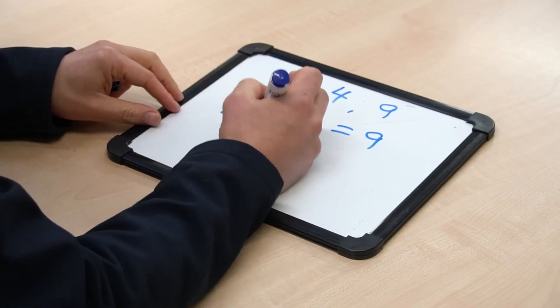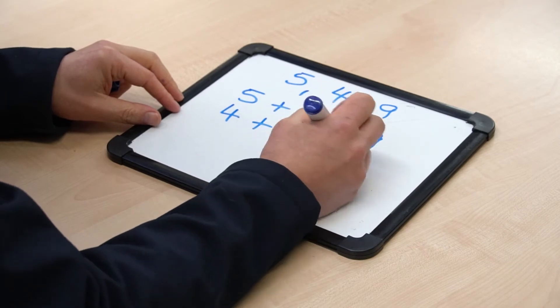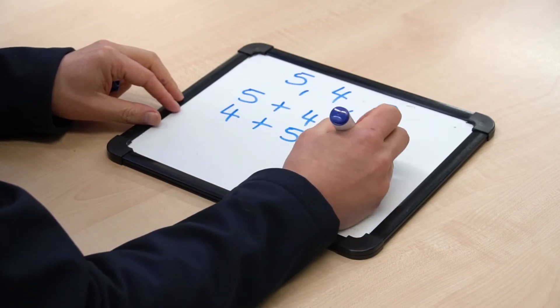Once we have this sum in front of us, we can then make three other sums — two addition and two subtraction. If we know that five plus four equals nine, we can flip those two numbers and four plus five also equals nine.